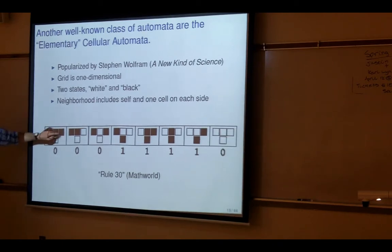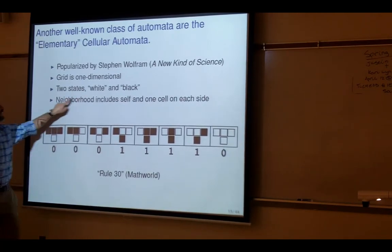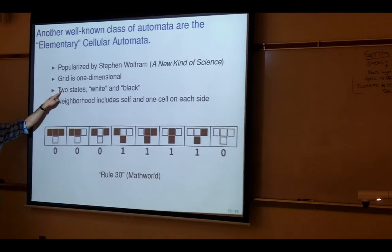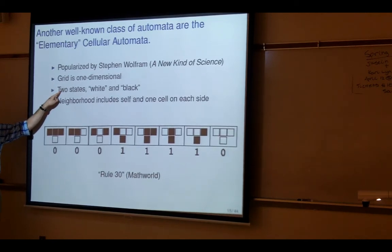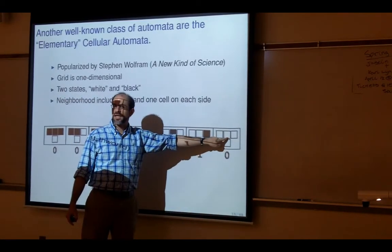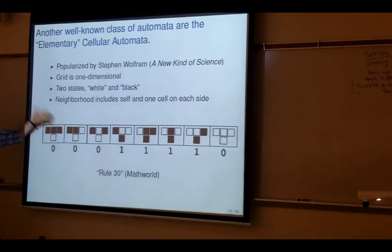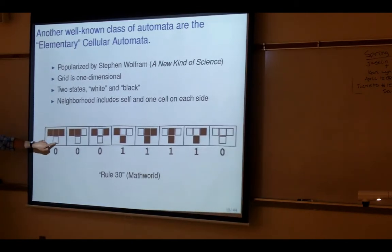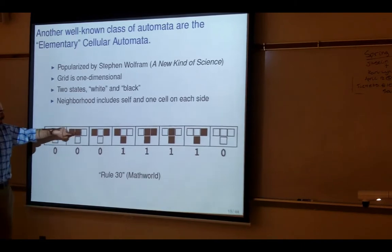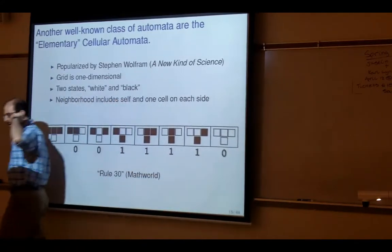The neighborhood is just three cells — the cell you're talking about and one on each side. How do you specify a rule? You've got three cells in the neighborhood, each in one of two states, so there are 2^3 = 8 different possible neighborhoods. For each of those eight possibilities you decide: is the center cell going to be zero or one, white or black? In this case someone has arbitrarily decided that three black gives white, and so on: zero, zero, one, one, one, one, one, zero.